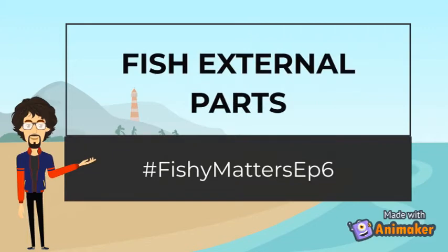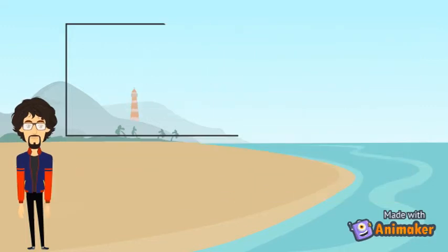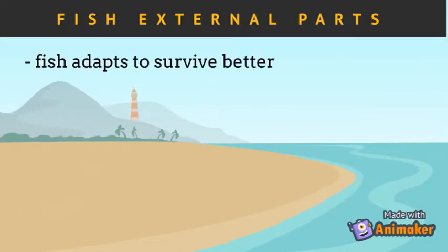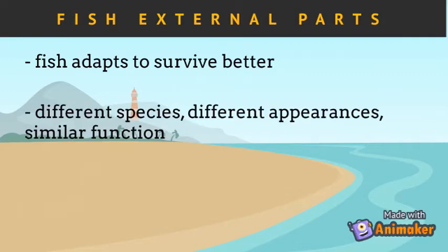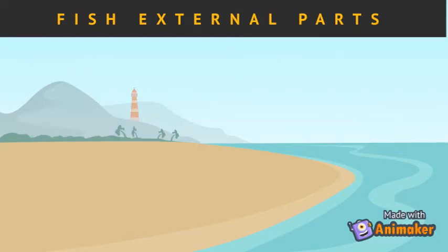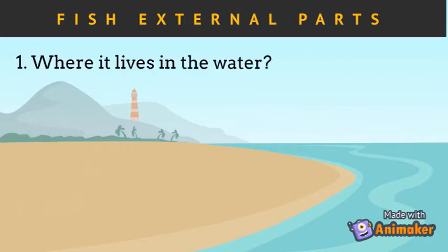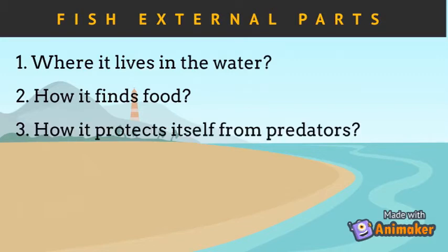Hello guys, welcome to the sixth episode of our Fishy Matters. In this episode we will talk about the external parts of fish. Fish made several adaptations over time to survive better in the environment, and different fish species have different appearances. But the function of their external anatomical features is similar. The external parts of fish can tell us a lot about the species, such as where it lives in the water, how it finds food, and how it protects itself from predators.